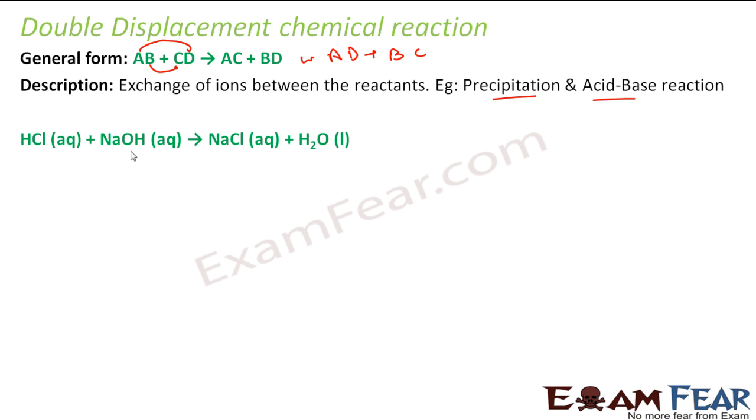So some examples are if you have HCl, hydrochloric acid and sodium hydroxide. You add this becomes sodium chloride, NaCl and water. So if you see this, this guy H forms a pair with OH. And Na forms a pair NaCl. So the one in square forms a pair and the one in circle forms a pair.